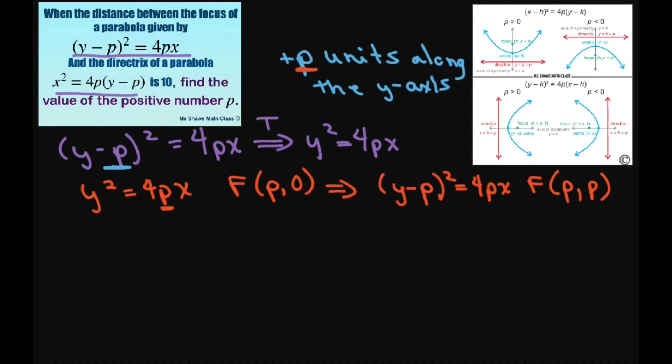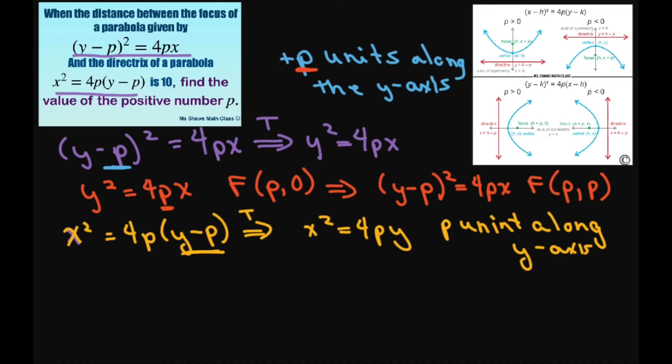Alright, now let's look at this one real quick. This one is x². Let's do a different color. x² = 4p(y-p). Now that's the translation of x² = 4py. And this is with p units along the y-axis. Again, we're setting this to zero and we get p.